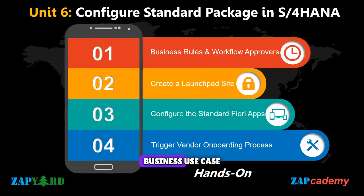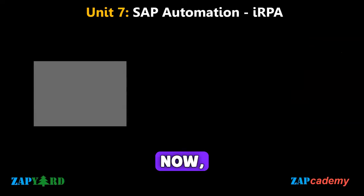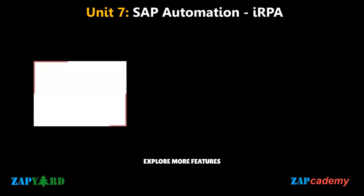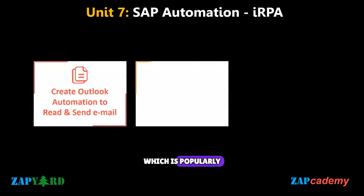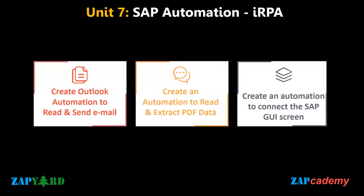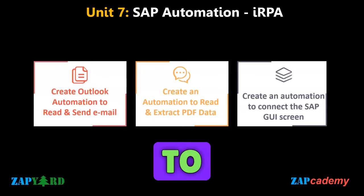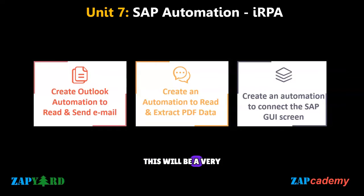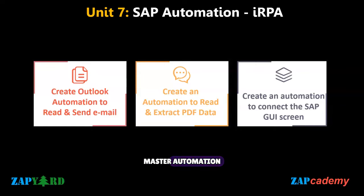Eventually, we will trigger the vendor onboarding process from the Fiori app and test the process. This is a real business use case and almost all SAP projects use these Fiori apps. All participants will be in a position to explore more features of SAP automation, popularly coined IRPA — Intelligent Robotic Process Automation. Using the intelligent feature, we will create an Outlook automation to read and send email, create an automation to read and extract PDF data, and finally create an automation to connect to the SAP GUI screen.